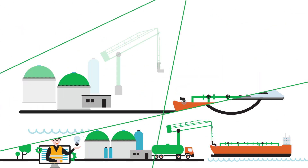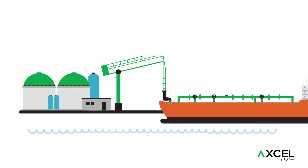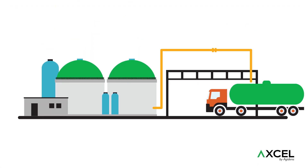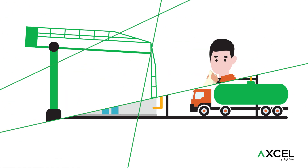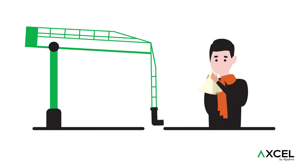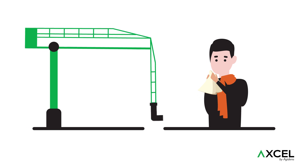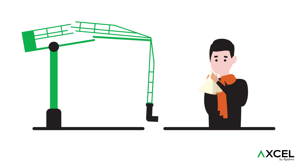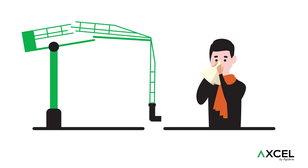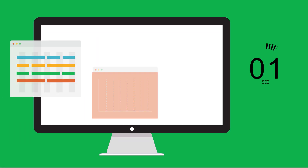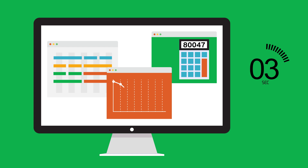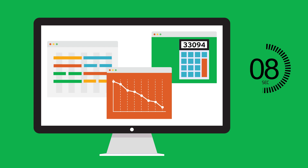It knows which barge is to be unloaded at which jetty and which truck is to be loaded at which loading station. And if one of the parameters changes — such as an asset that becomes unavailable, for example a broken tank arm or a sick operator — Excel automatically interprets it and calculates a new, fully optimized scenario in a matter of seconds, while keeping into account the new situation on the terminal.